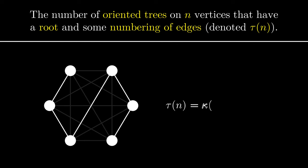Next, the root can be any of the n vertices, so we multiply by n. Finally, the edge numbers can be any permutation of numbers from 0 to the number of edges, which is n-1. This brings the total to κ(n) times n times (n-1) factorial.